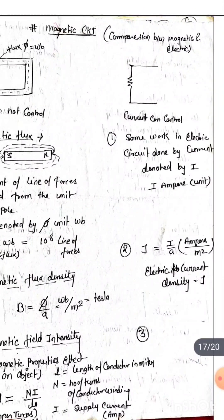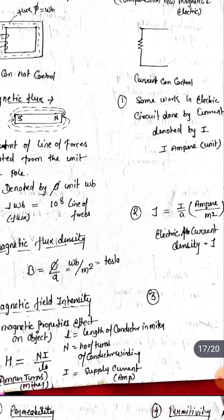In electric circuit, work of electricity is done by current, denoted by I and measured in amperes.